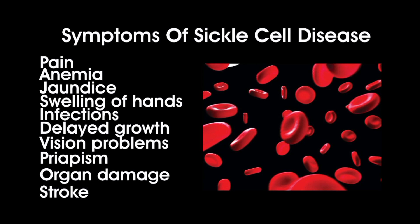The symptoms of sickle cell disease can vary depending on the type and severity. Common symptoms include pain, also known as a sickle cell crisis, which can occur anywhere in the body and range from mild to severe, lasting several hours or days. SCD can also cause anemia, a condition in which the body does not produce enough red blood cells, leading to fatigue, weakness, and shortness of breath.